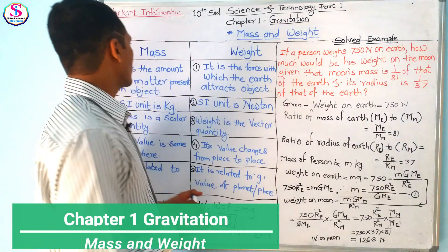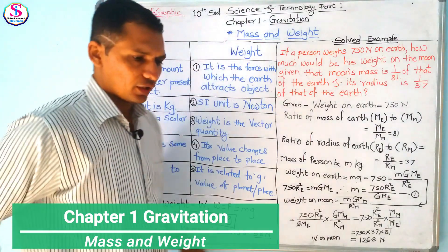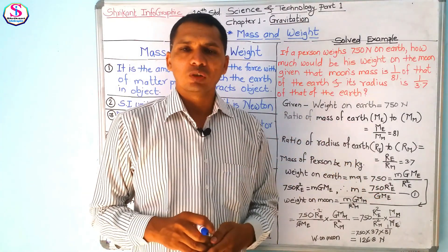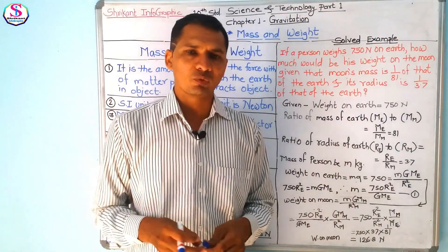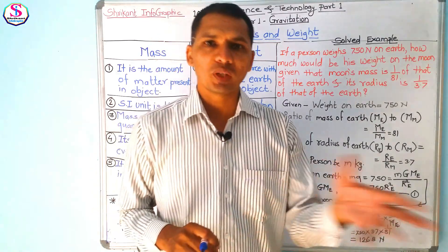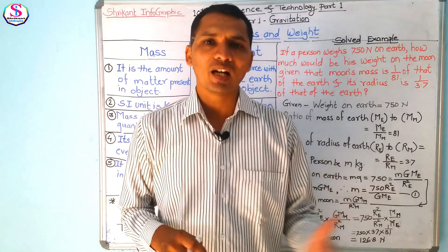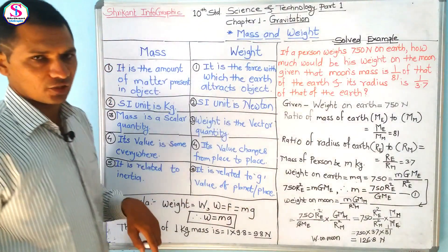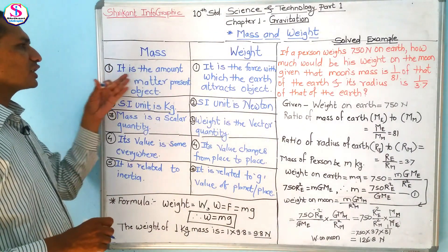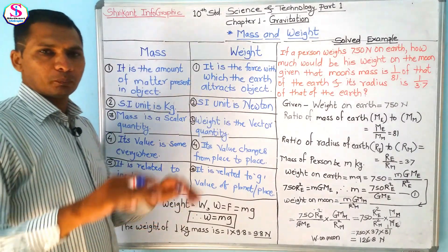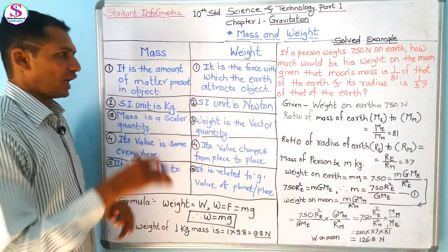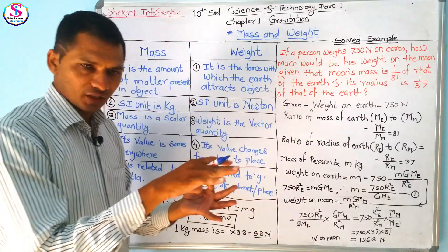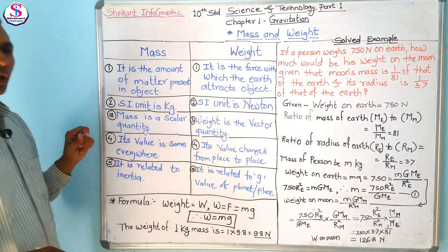Now look at the blackboard. I have written the points for mass and weight here. Basically mass and weight are totally different things. But because of their unit — that is kilogram — we often go to a shop and ask for kilograms of weight. But actually we are calculating the mass of that object. So mass is the amount of matter present in an object, and weight is the force with which the earth attracts objects.